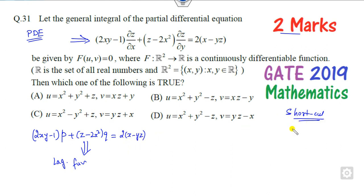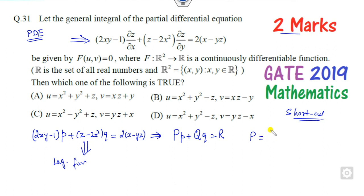So what is the shortcut? You can compare this equation with the standard form P·p + Q·q = R. Now, how do you find the values of P, Q, and R? You can find P with the help of a determinant, Q is again found with the help of a determinant, and R is again found with the help of a determinant.